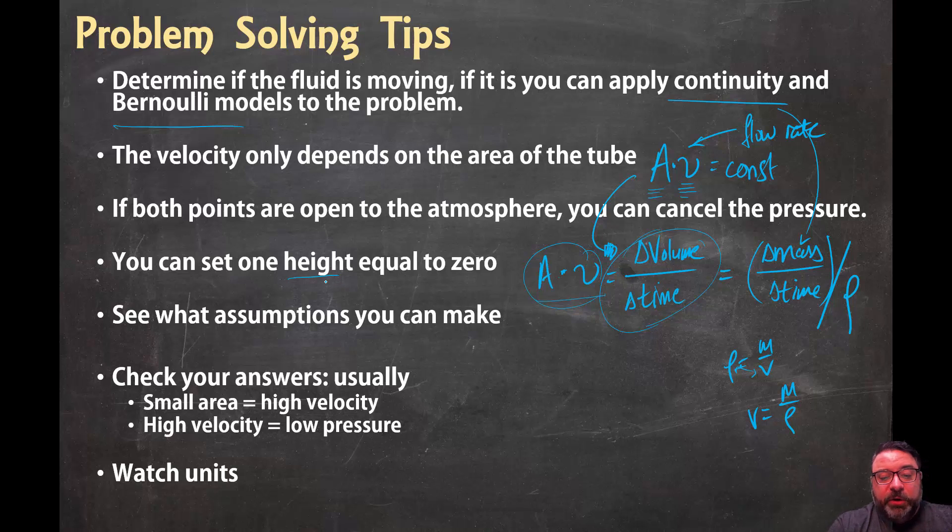Remember, you always get to set one height equal to zero because you set whatever the heights are based on. So it's usually helpful to make one height in your problem zero and then base the other height on that first height. It just makes life a little bit easier. It gives you one less term to worry about. And also for these questions, assumptions are super important. A lot of times, almost every problem, you can make some assumptions that cancel out terms. It just makes your math life at the end a little bit easier.